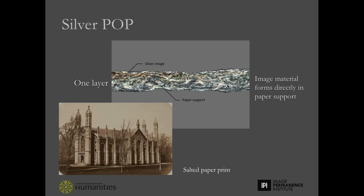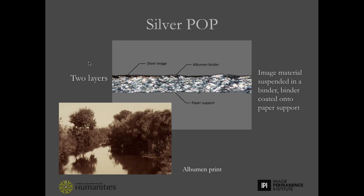While the chemistry of all silver printed out prints is similar, resulting in similar image tones, the rest of the image materials differ. Salted paper prints have a one-layer structure — silver halides are applied directly to the paper support, so the image forms in the paper. In the cross section, you can see the silver image forms within the paper support, giving us a relatively soft image in terms of image quality.